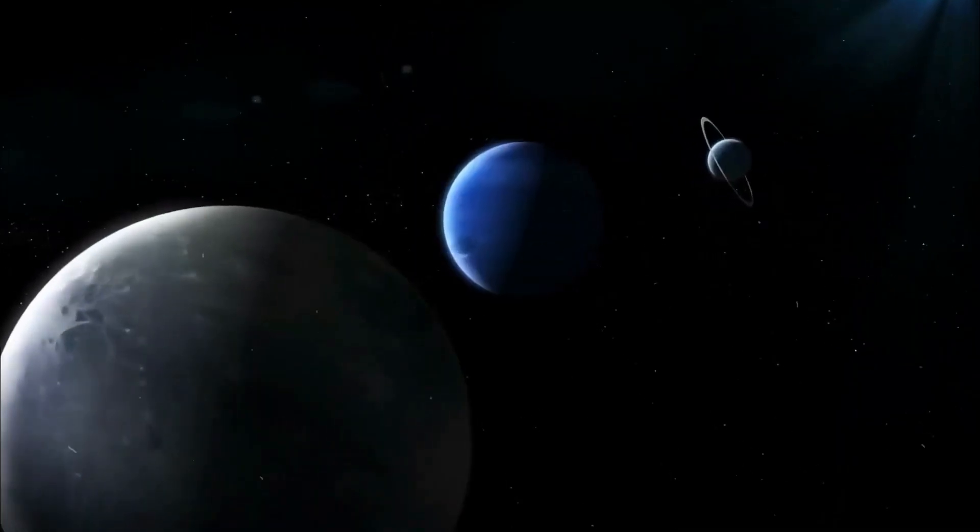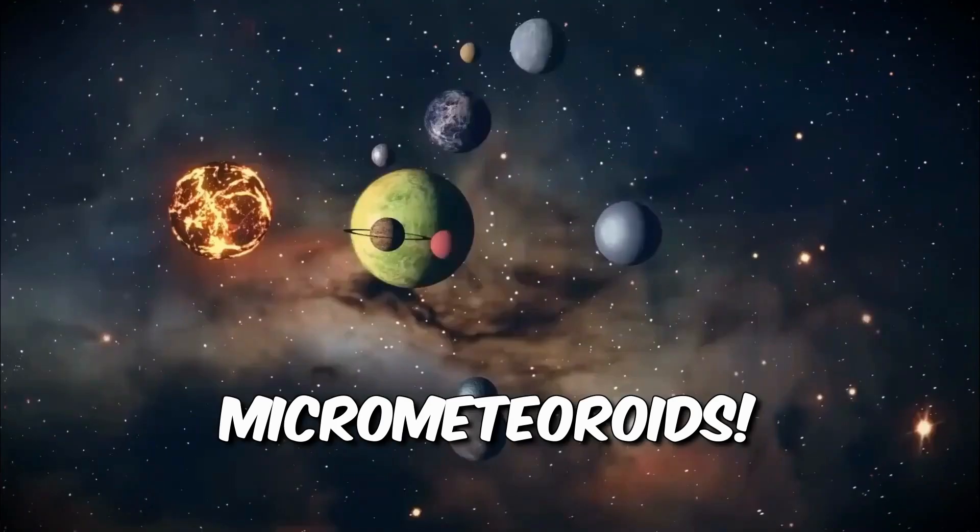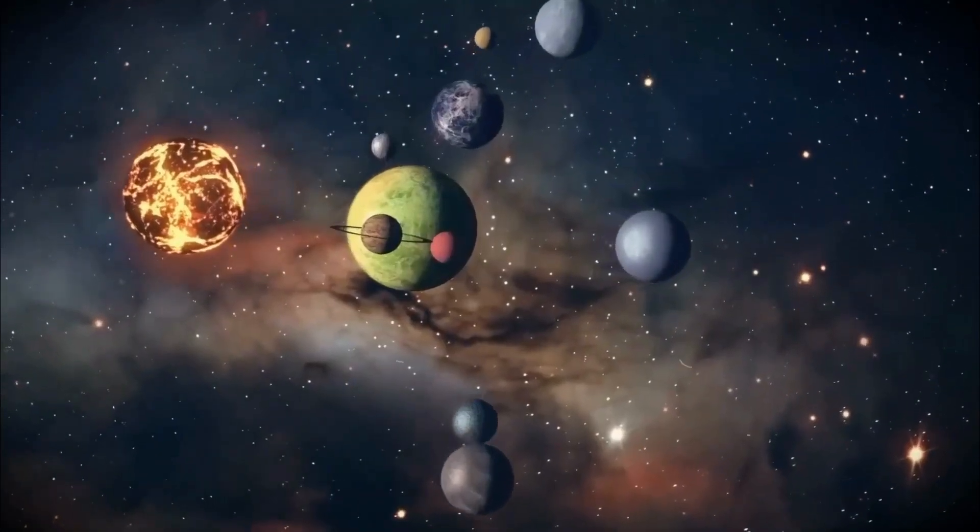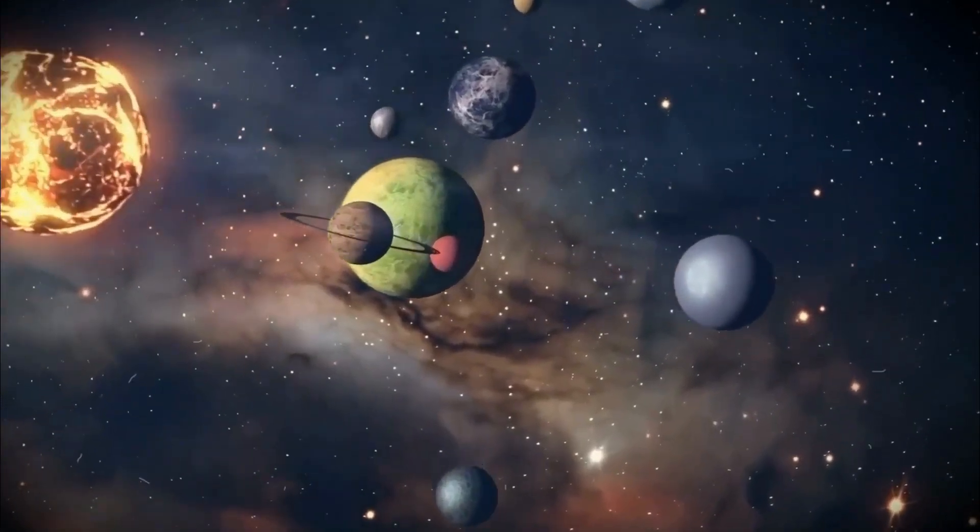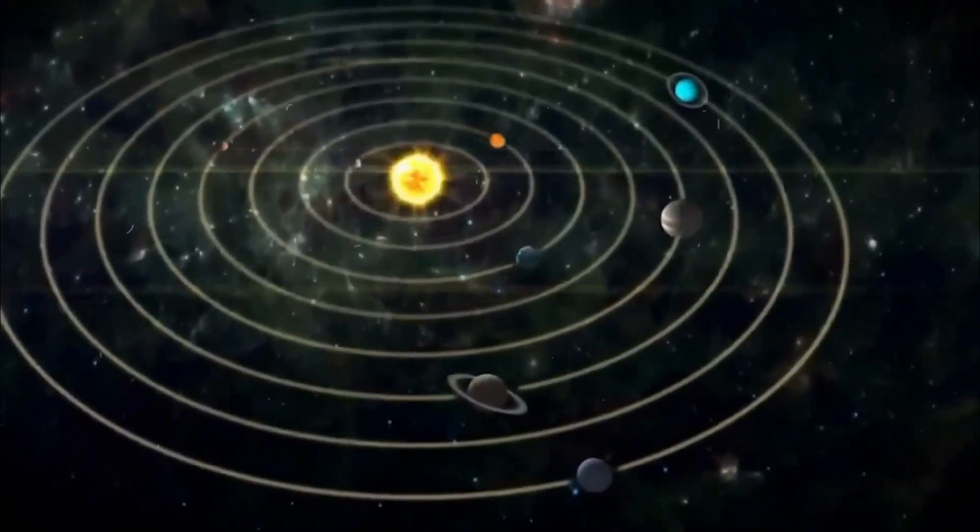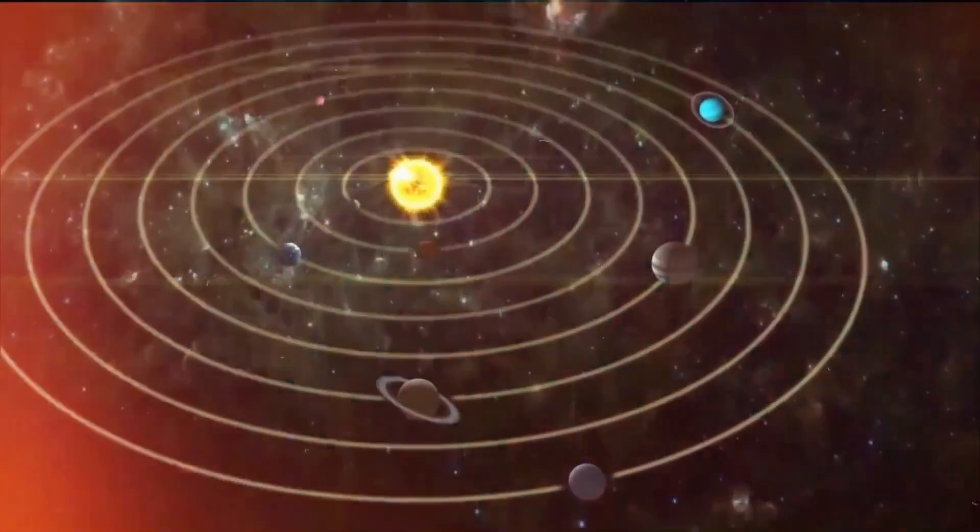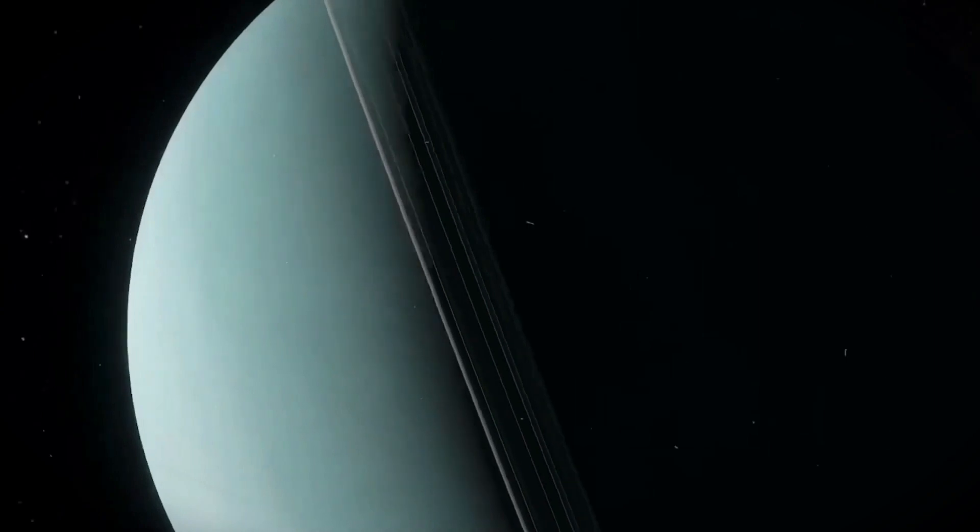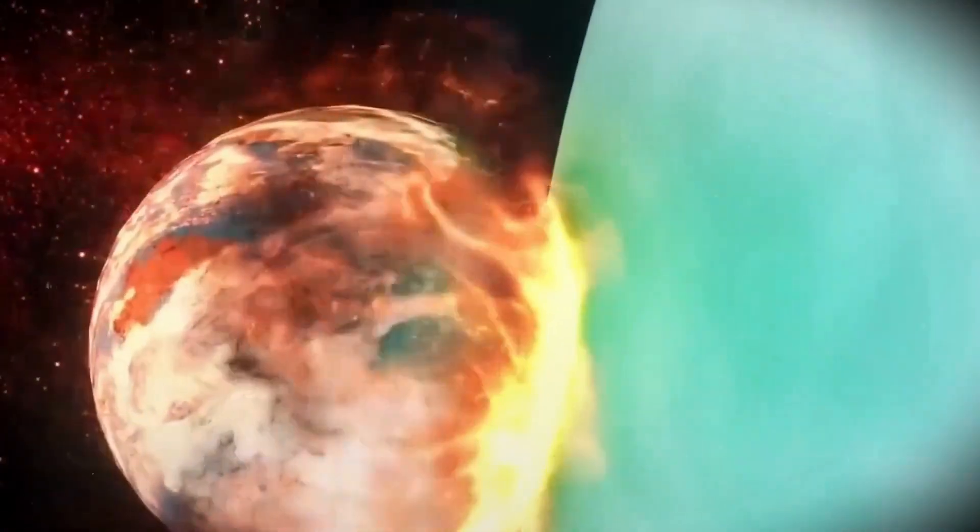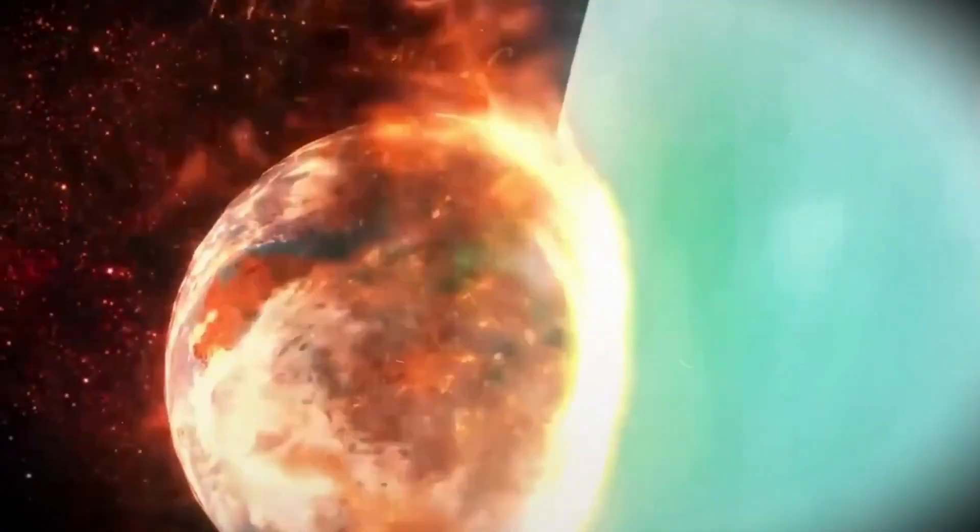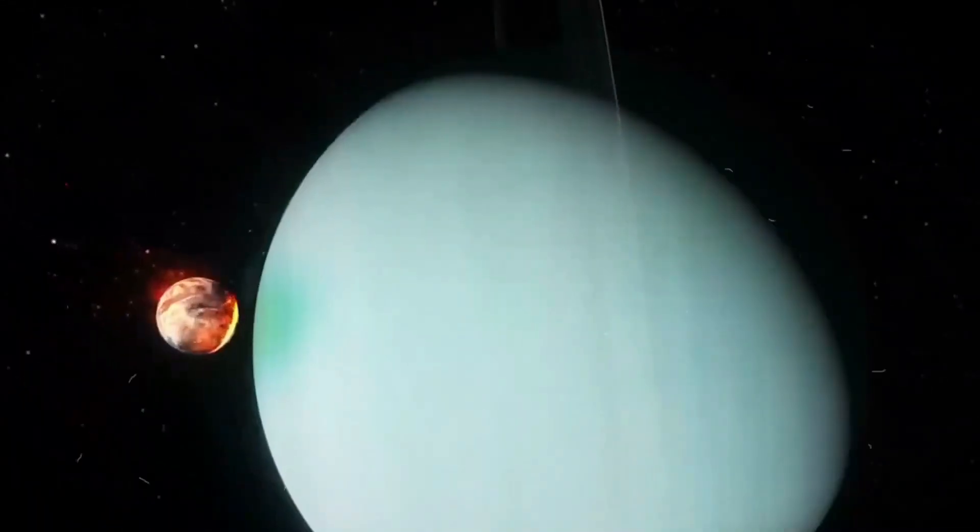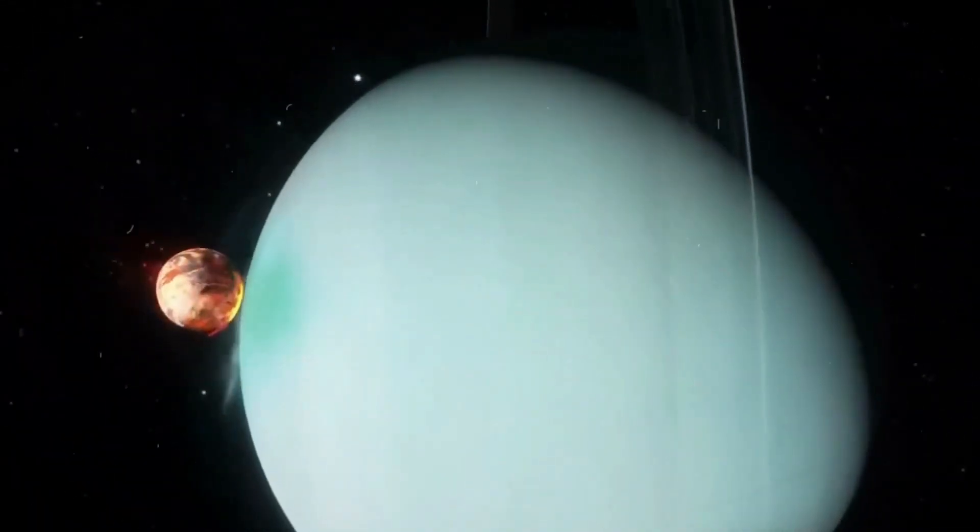And here's the real kicker. Micrometeoroids. These are like tiny space bullets, remnants from comets and asteroids, zooming around at crazy speeds. Even though they're small, they pack a punch. A collision with one of these can mess up a delicate electronic component in Voyager's system, causing interference and all sorts of trouble.